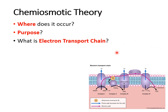Two very important things occur in the electron transport chain: NADH is oxidized to form NAD+, and oxygen is reduced to form water. We'll talk about these in detail as we go through each step of the electron transport chain.